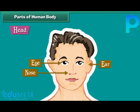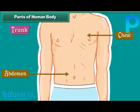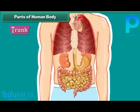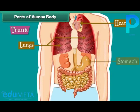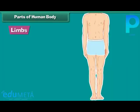The trunk is the middle part of the body. It is divided into the chest and abdomen. Many important organs such as the heart, lungs, stomach, intestines, and kidneys are located inside the trunk.